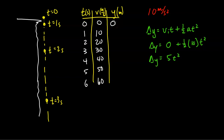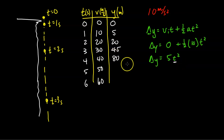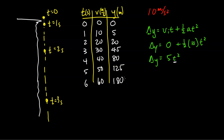Filling in the displacement column: at 0 seconds it's 0. At 1 second: 1 squared times 5 is 5 meters. At 2 seconds: 2 squared is 4, times 5 is 20 meters. At 3 seconds: 3 squared is 9, times 5 is 45 meters. At 4 seconds: 4 squared is 16, times 5 is 80 meters. At 5 seconds: 5 squared is 25, times 5 is 125 meters. At 6 seconds: 6 squared is 36, times 5 is 180 meters. This table lets you quickly calculate how far something has fallen and what its velocity is after any number of seconds.